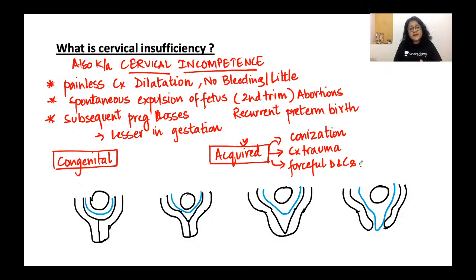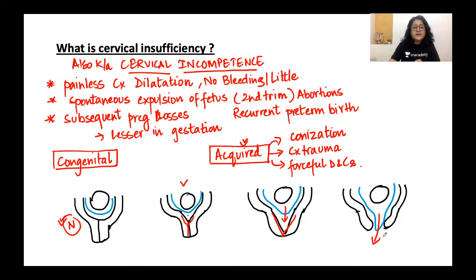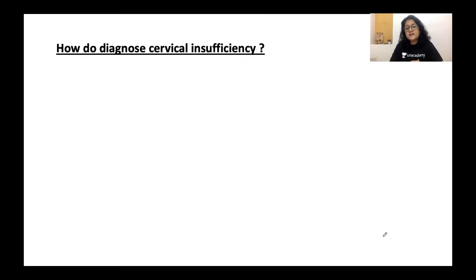In cervical incompetence, a normal closed cervix starts to open up from above — from the internal os. We see a Y-shape of the cervix first, then slowly it becomes V-shaped. The membranes start bulging into it, forming a funnel. Eventually the external os opens, the membranes bulge outside, the cervix gives way, and the baby drops down.